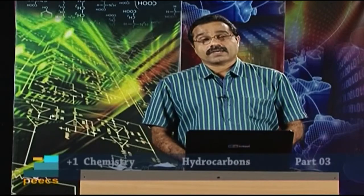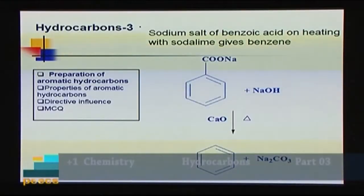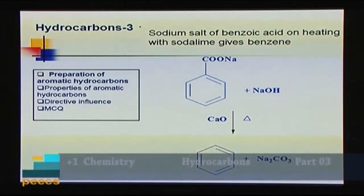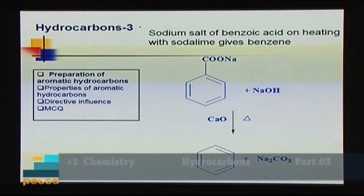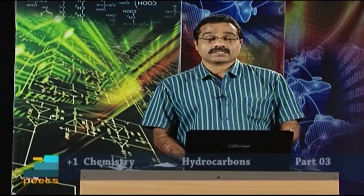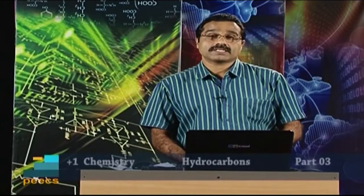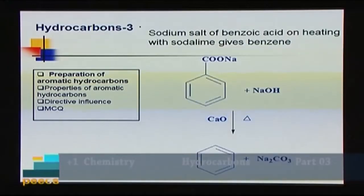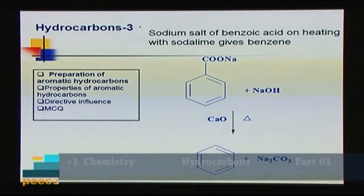In the last class we discussed aromatic hydrocarbons — compounds containing an aromatic ring. Here we are dealing with compounds containing a benzene ring. Benzene contains a ring of 6 carbon atoms with alternate carbon-carbon double and single bonds. All the carbon-carbon bond distances are equal, and benzene is stable due to resonance. Its stability can also be explained by delocalization of pi electrons.